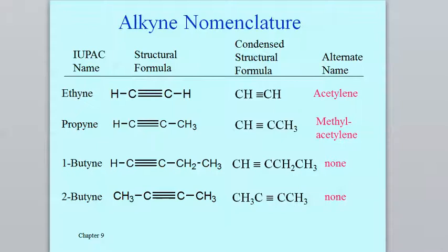Like I do whenever I introduce a new class of compounds, we're going to want to be able to put names and structures together. You can see from the word 'alkyne' itself that '-yne' becomes the suffix at the end of any particular such compound. So the simplest case is two carbons sharing a triple bond, in which case we get ethyne, and you can see in red on the right that's also more famously known as acetylene, which is the reason for the welder picture on that previous slide.